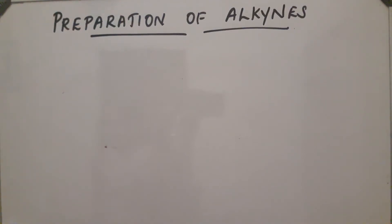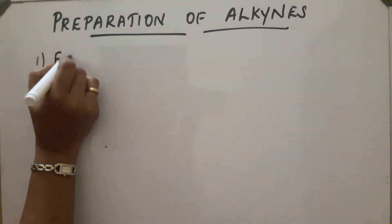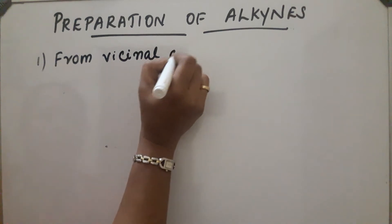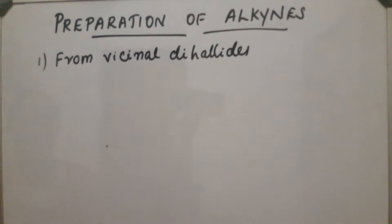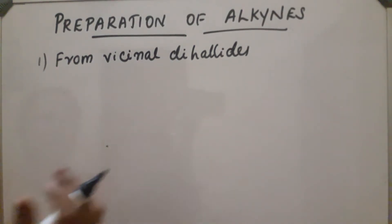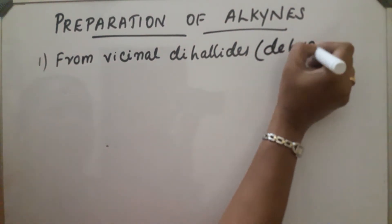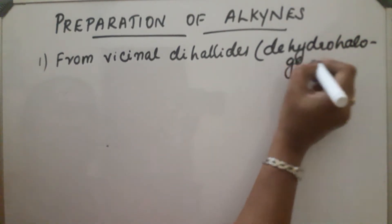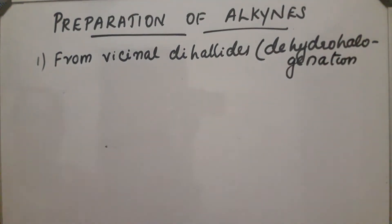Preparation of alkynes. First preparation: from vicinal dihalides. Vicinal dihalides means two adjacent carbon atoms containing halogen atoms. This process is also called dehydrohalogenation, where a hydrohalide is removed. This is a two-step process; in each step, one hydrogen halide is removed.